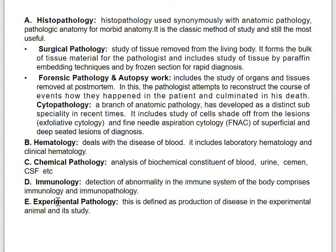The next branch is hematology, which deals with diseases of blood, including laboratory hematology and clinical hematology. The next branch is chemical pathology, which covers analysis of biochemical constituents of blood, urine, semen, and CSF — cerebrospinal fluid. The next branch is immunology, which involves detection of abnormalities in the immune system of the body, consisting of immunology and immunopathology.